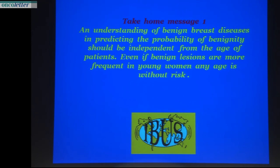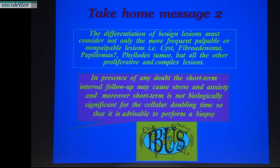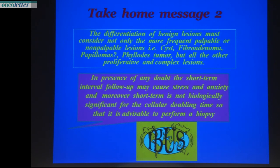The take-home message: understanding benign breast disease and predicting the probability of benignity should be independent of the patient's age. Even if benign lesions are more frequent in young women, remember that no age is without risk. Differentiation of benign lesions must consider not only palpable or non-palpable lesions but also proliferative and complex lesions. In the presence of any doubt, short-term follow-up may cause stress and anxiety and is not biologically significant for cellular doubling time — cancer doubling time ranges from 29 to 400 days, so a 3-month check is not useful for cancer. It is better to perform a biopsy.